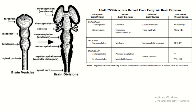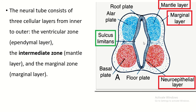The mesencephalon is converted into the midbrain, a tiny portion of the brain, and its cavity is known as the cerebral aqueduct. The rhombencephalon is converted into the metencephalon and myelencephalon — from the metencephalon, the pons and cerebellum develop; from the myelencephalon, the medulla oblongata develops, and its cavity is the fourth ventricle. From the forebrain, the olfactory and optic nerves arise; from the midbrain, the oculomotor and trochlear nerves arise; and the rest of the cranial nerves are associated with the hindbrain.